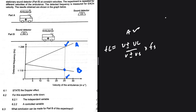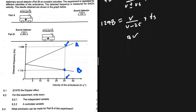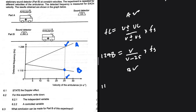In part a, the sound source is moving towards, so the detected frequency is 1298 Hz. This equals v divided by (v − 25), multiplied by f_s, since the listener is stationary and the source moves towards. In part b, the source is moving away and the detected frequency is 1115 Hz, giving: 1115 = [v / (v + 25)] × f_s. We now have two equations to solve simultaneously for v and f_s.